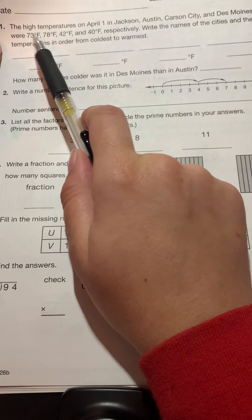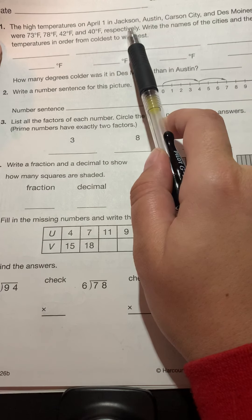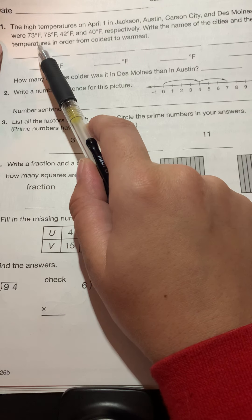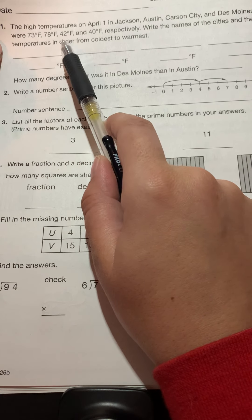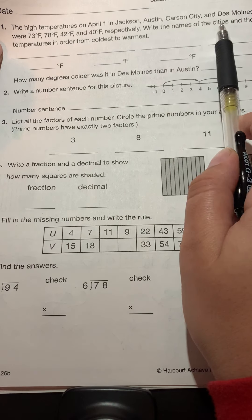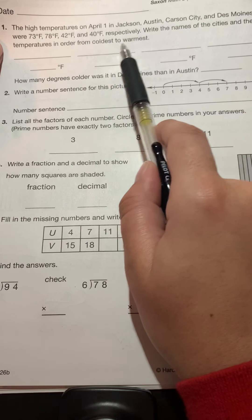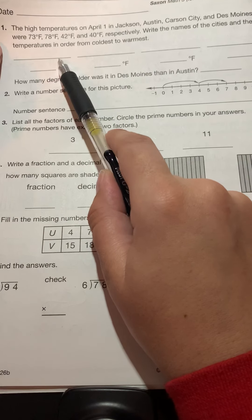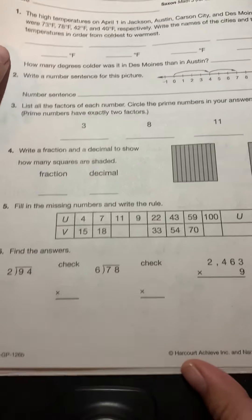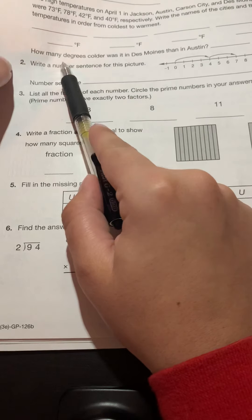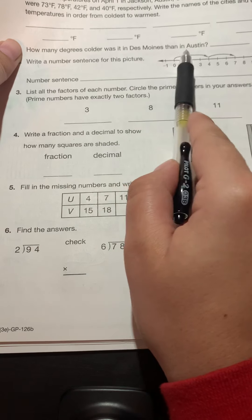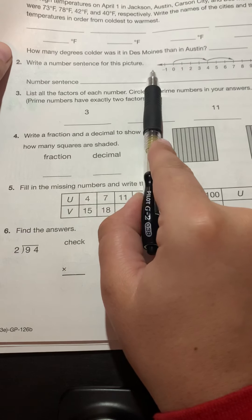All right, taking a look at homework. Number one, the high temperatures on April 1st in Jackson, Austin, Carson City, and Des Moines were 73 degrees Fahrenheit, 78 degrees Fahrenheit, 42 degrees Fahrenheit, and 40 degrees Fahrenheit, respectively. Write the names of the cities and their temperatures in order from coldest to warmest. You need city names. Please spell them correctly. They're written up here for you. And we need the temperatures down at the bottom. Don't forget this little question. I almost skipped it earlier. How many degrees colder was it in Des Moines than in Austin?